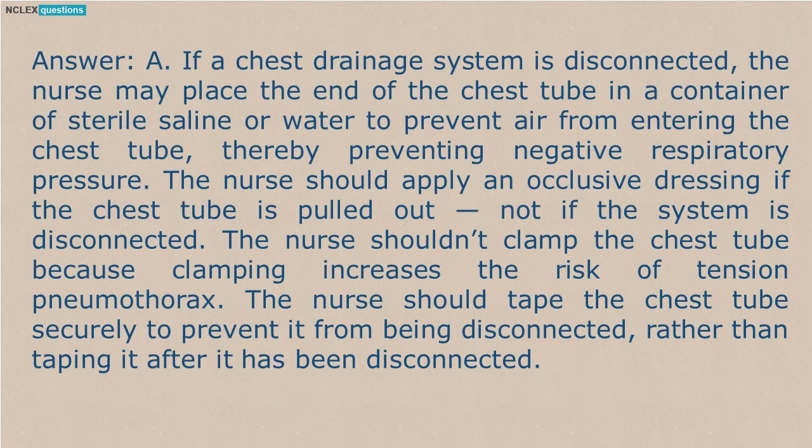Answer A. If a chest drainage system is disconnected, the nurse may place the end of the chest tube in a container of sterile saline or water to prevent air from entering the chest tube, thereby preventing negative respiratory pressure. The nurse should apply an occlusive dressing if the chest tube is pulled out, not if the system is disconnected. The nurse shouldn't clamp the chest tube because clamping increases the risk of tension pneumothorax. The nurse should tape the chest tube securely to prevent it from being disconnected, rather than taping it after it has been disconnected.